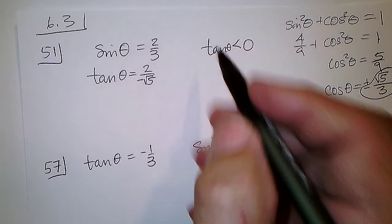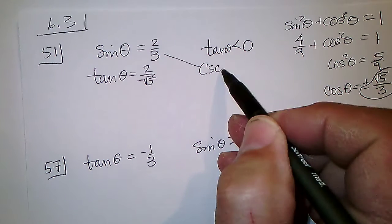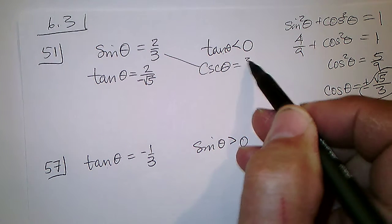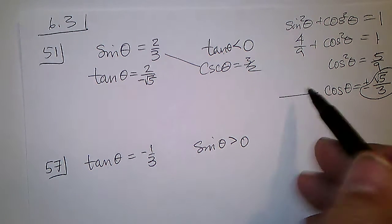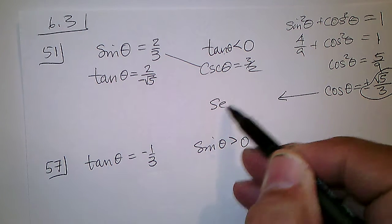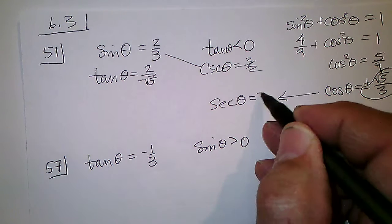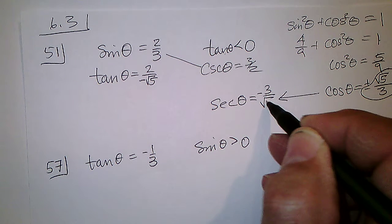And then the sine's reciprocal, the cosecant, will be 3/2, and the cosine's reciprocal would be the secant, or negative 3 over the square root of 5.